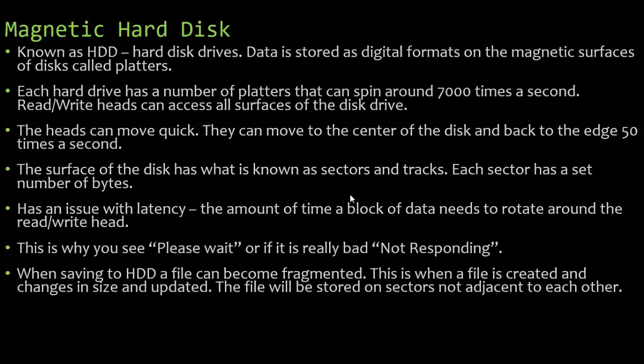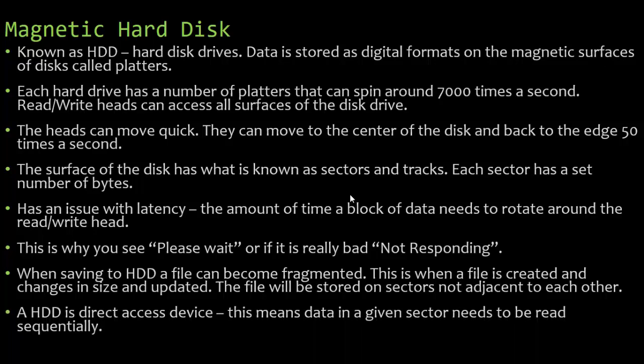When saving to a hard disk drive, a file can become fragmented — when a file is created, changes in size, and is updated, the file will be stored on sectors that aren't adjacent to each other. For example, if you're using sectors A, B, and C, then download a music file that takes up D, E, F, and then save your Word document, DEF is already full, so the next part is stored in G, H, I. The disk then has to load every single fragmented piece, which takes longer and longer over time. It is a direct access device, meaning data in a given sector needs to be read sequentially. If you don't defrag your computer and you have a hard disk drive, it runs slow because everything is scattered and must be read sequentially from beginning to end.